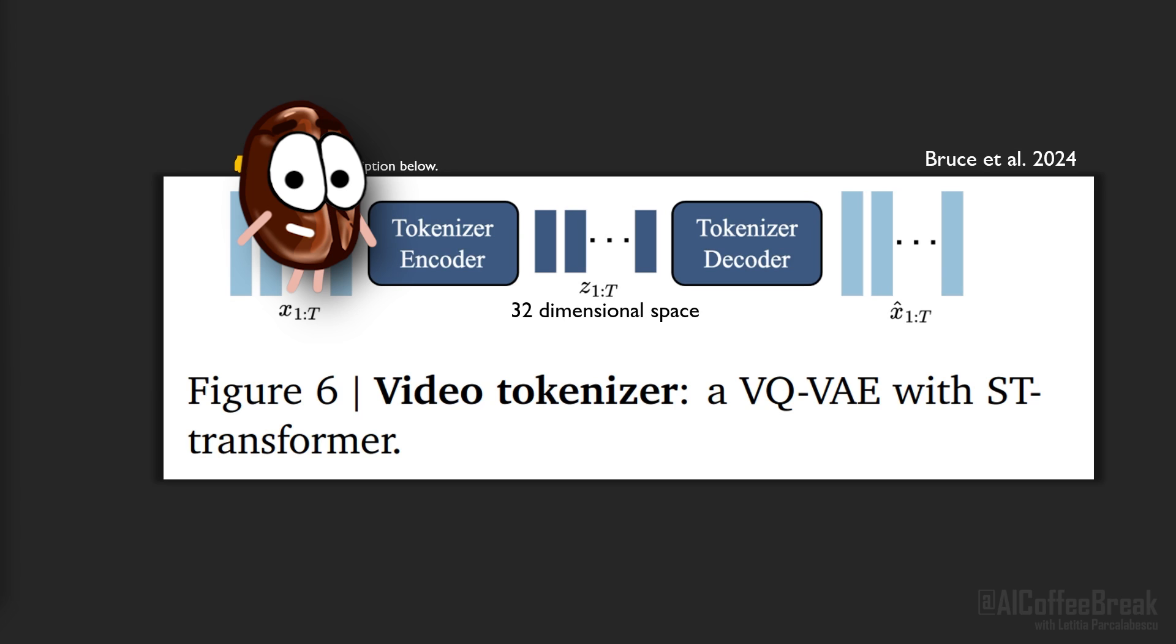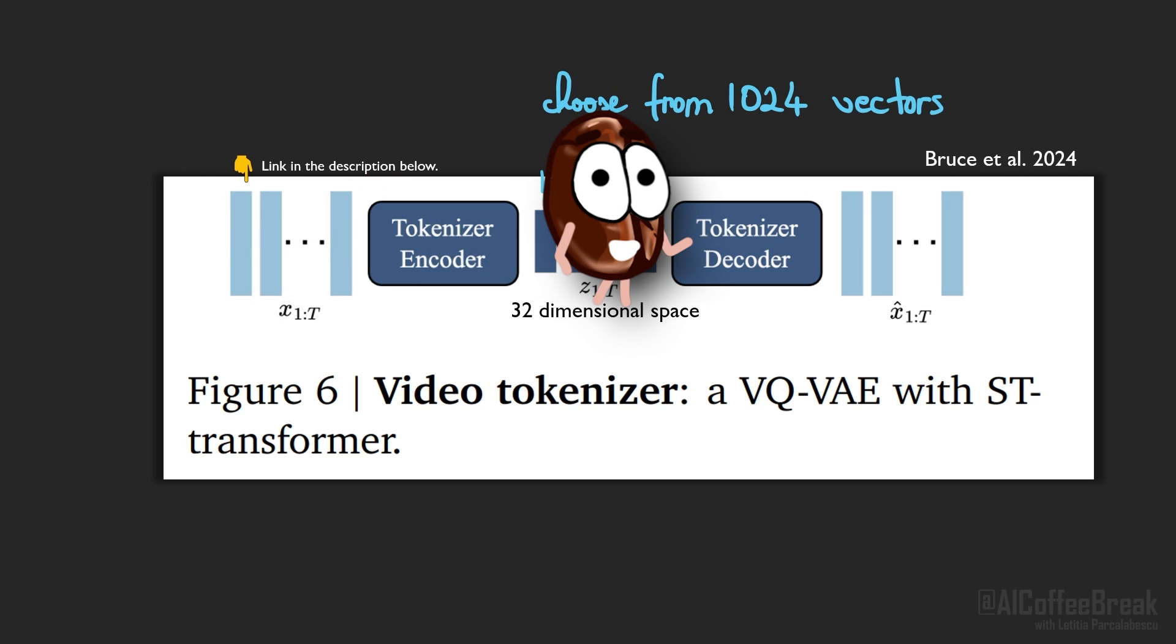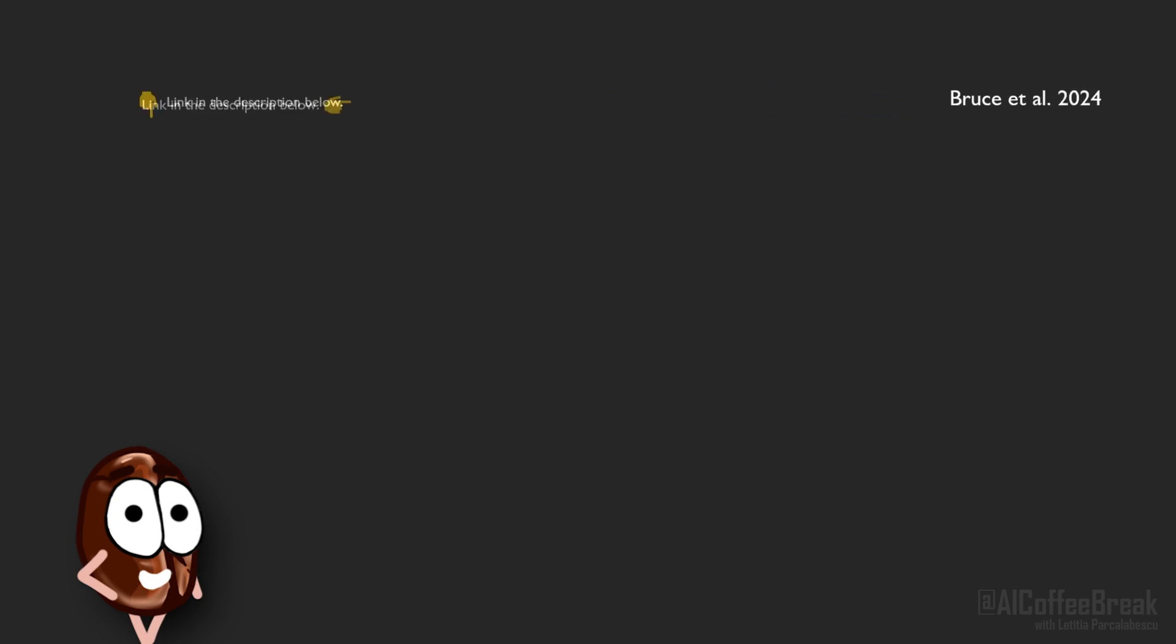Because it is a VQ-VAE, it reduces the dimension to discrete representations. So basically the encoder is not allowed to map to any embedding vector in the lower dimensional space (32 dimensions here), but it must choose between 1024 embeddings whose values it learns during training. Then an ST-transformer decoder reconstructs these frames, and this thing is trained to reconstruct the video frames it gets as input.